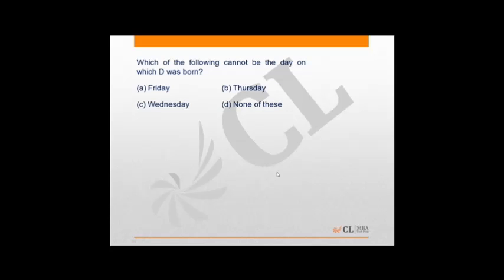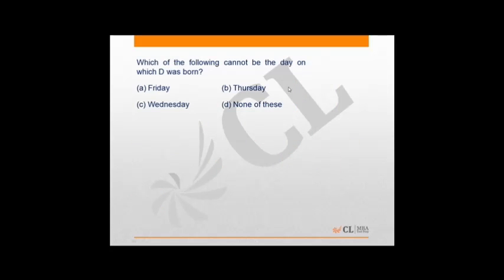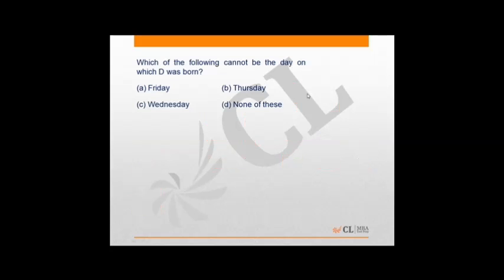Question: which of the following cannot be the day on which D was born? Options are Friday, Thursday, and Wednesday. D may be born on Friday or Thursday, but D cannot be born on Wednesday — because between F and D there is always G. Even if F is born on Tuesday, G must occupy Wednesday. So D is born at least on Thursday. The answer is Wednesday.